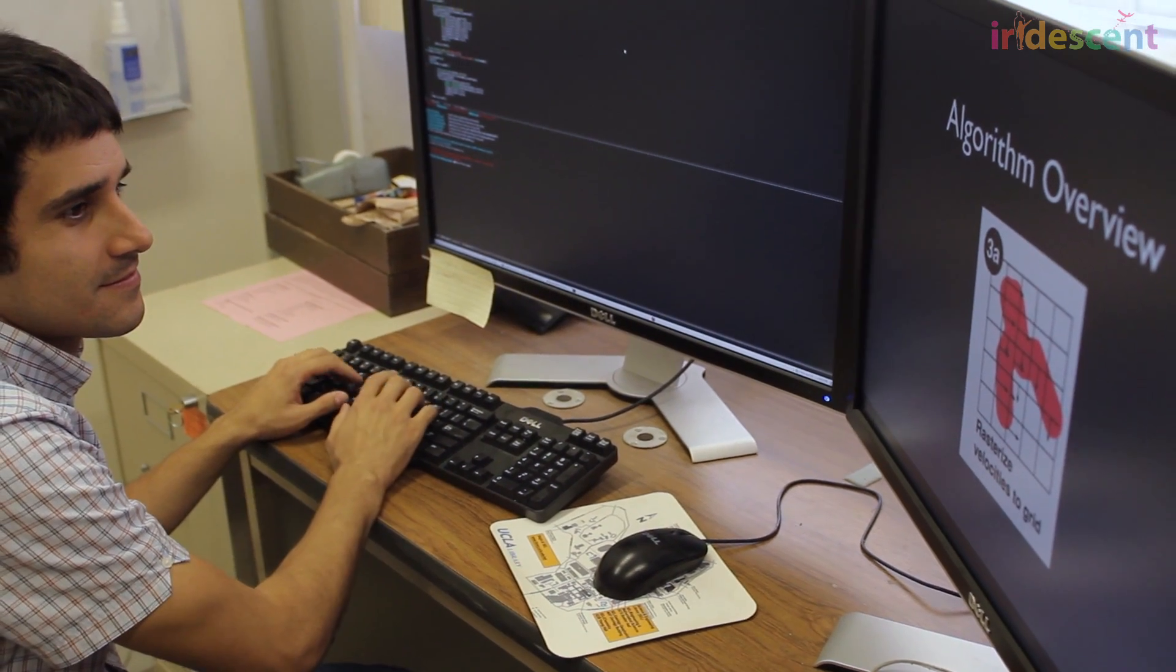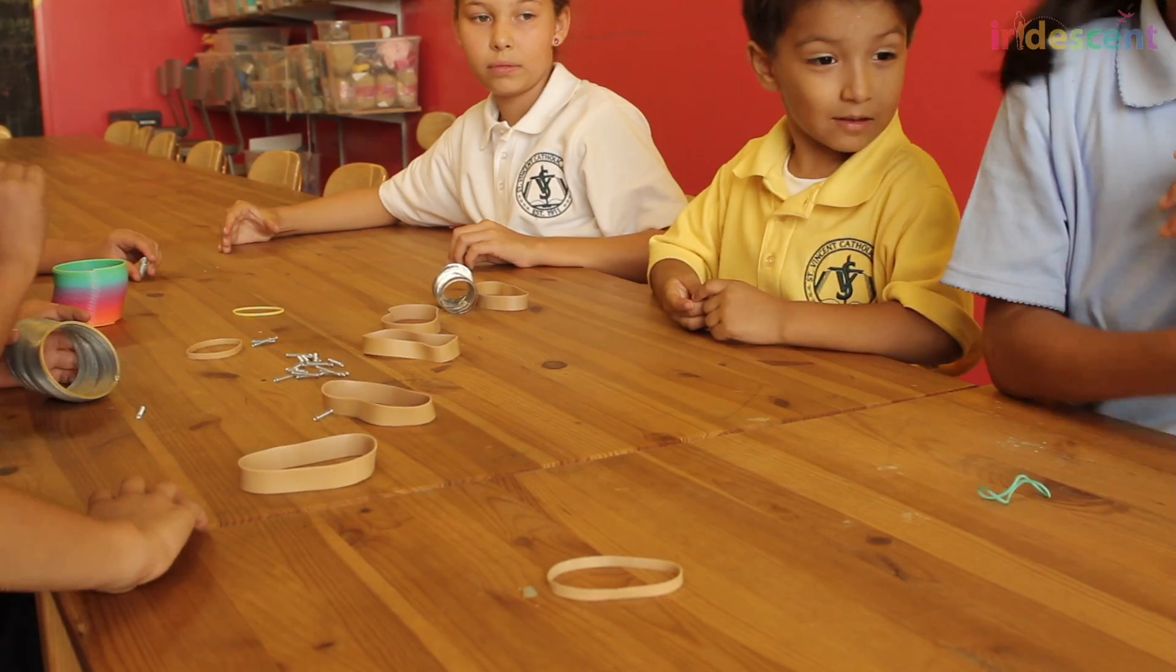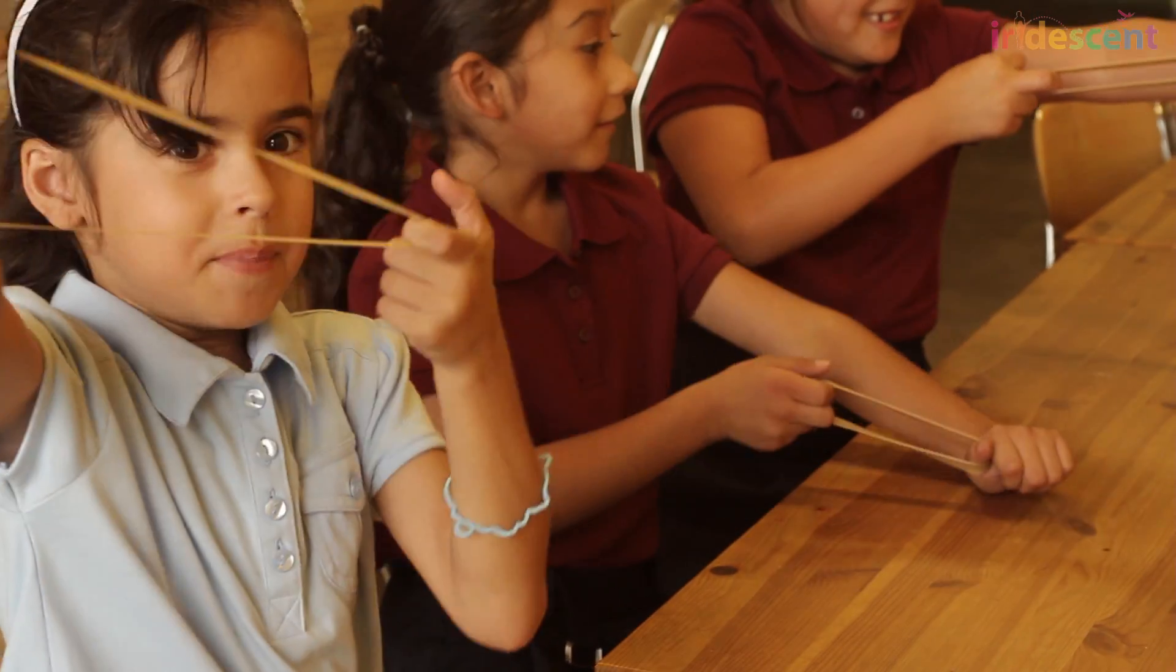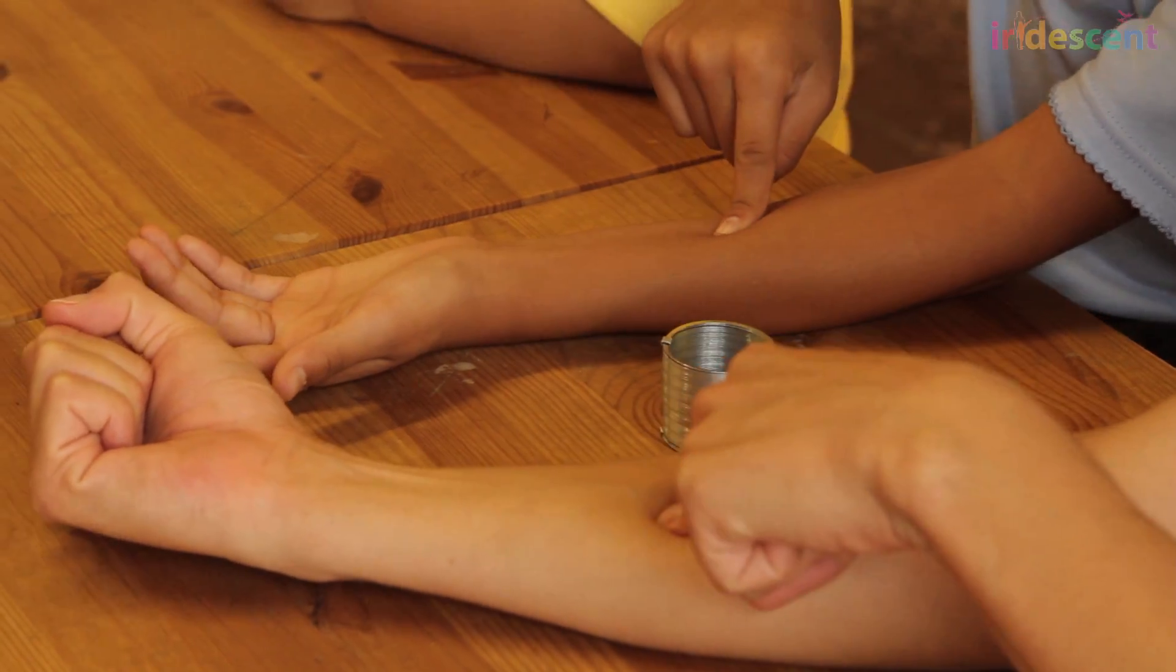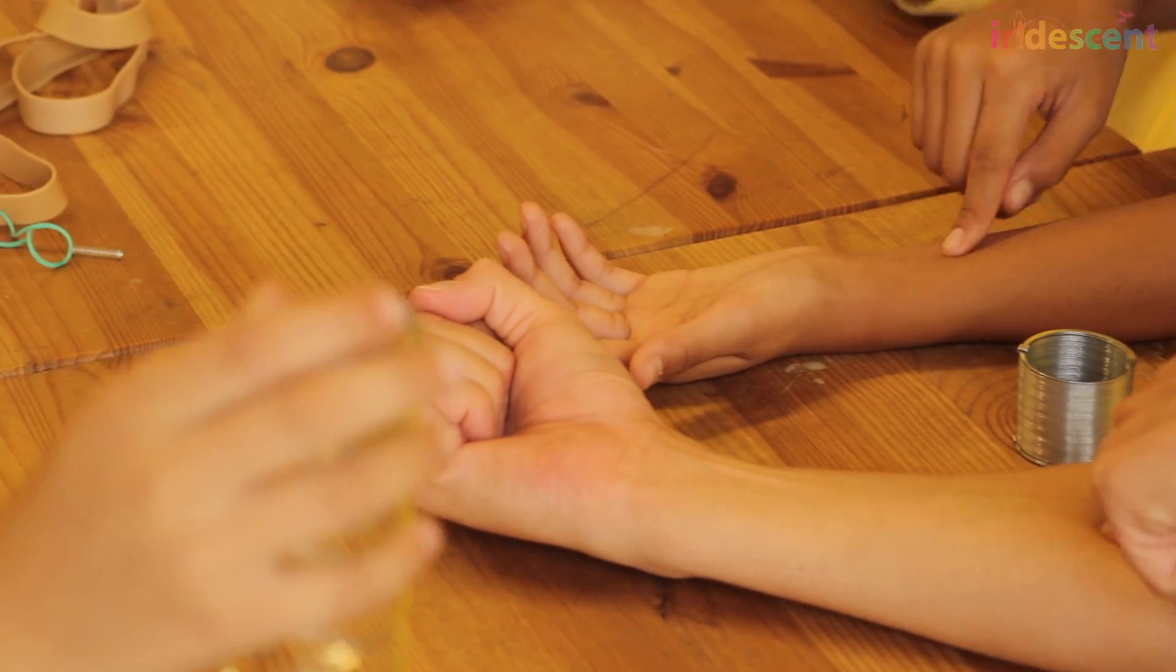He explains that the hardest objects to simulate are those that are elastic. Objects that are squishy and change shapes, but don't break very often. Try to press on an area of your arm, for example. You will notice that it bounces back to the original shape.